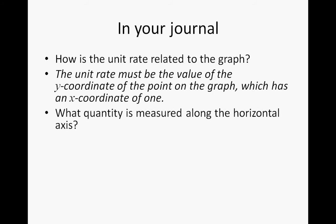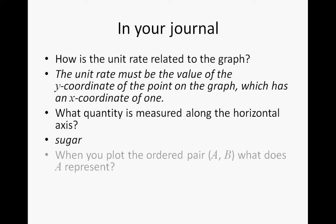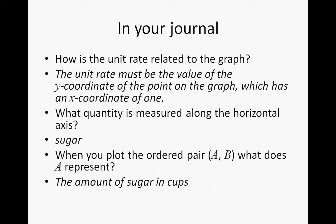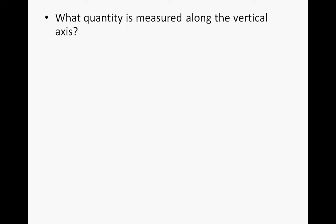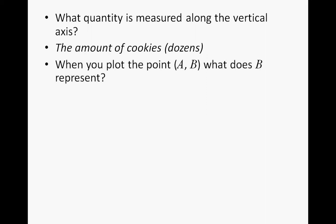What quantity is measured along the horizontal axis? The answer is sugar, in cups. When you plot the ordered pair a comma b, the value a represents the amount of sugar in cups. Along the vertical axis, the quantity measured is the amount of cookies — and it matters that they are in dozens, since that is the unit we're measuring by. So when you plot the point a comma b, the value b represents the total amount of cookies, again in dozens.